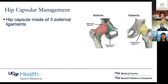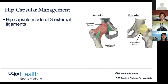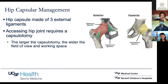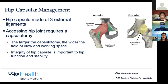Switching gears to hip capsular management: one part of hip arthroscopy is that you have to cut the capsule to get into the joint. The difference for the hip is that the capsule really contributes to joint stability — it's made up of the iliofemoral, pubofemoral, and ischiofemoral ligaments. The larger the cut in the capsule, the wider the field of view and easier the surgery, but the integrity of the hip capsule is really important to function and stability. More recently, there's been a shift towards closing the capsule — in the past people used to cut the capsule out or not close it at all.